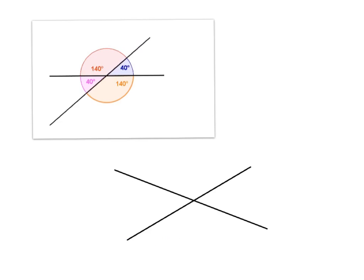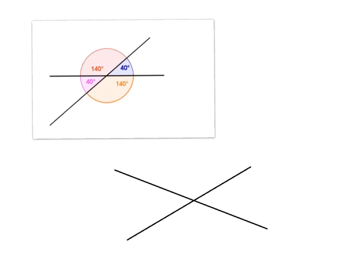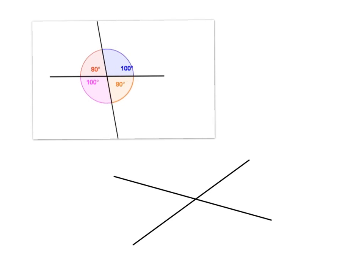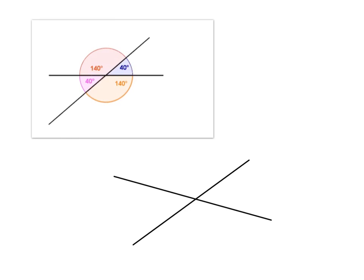Now observe the video — pay particular attention to the blue and pink angles and how they relate, and the red and orange angles and how they relate. What you should observe is that the blue and pink remain the same as each other, and the red and orange remain the same as each other. As one arm moves, it makes both angles smaller simultaneously — they remain the same size as each other.